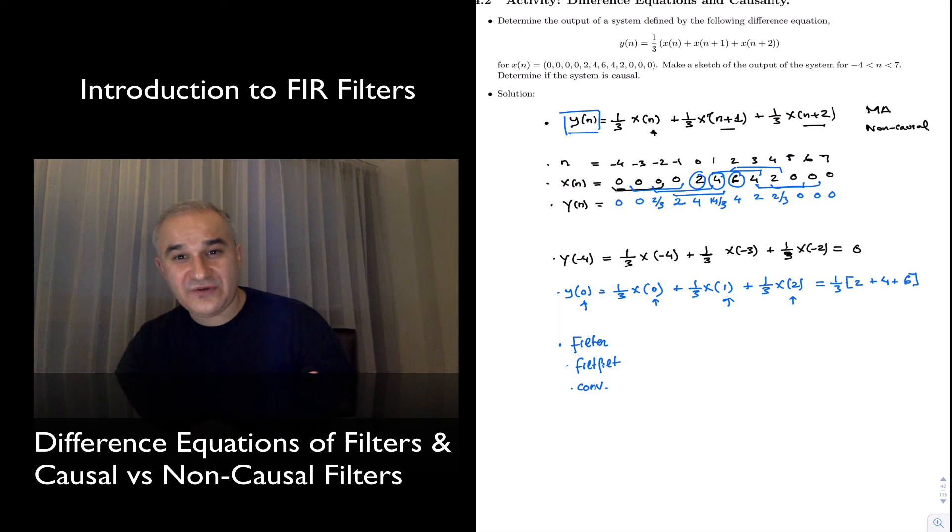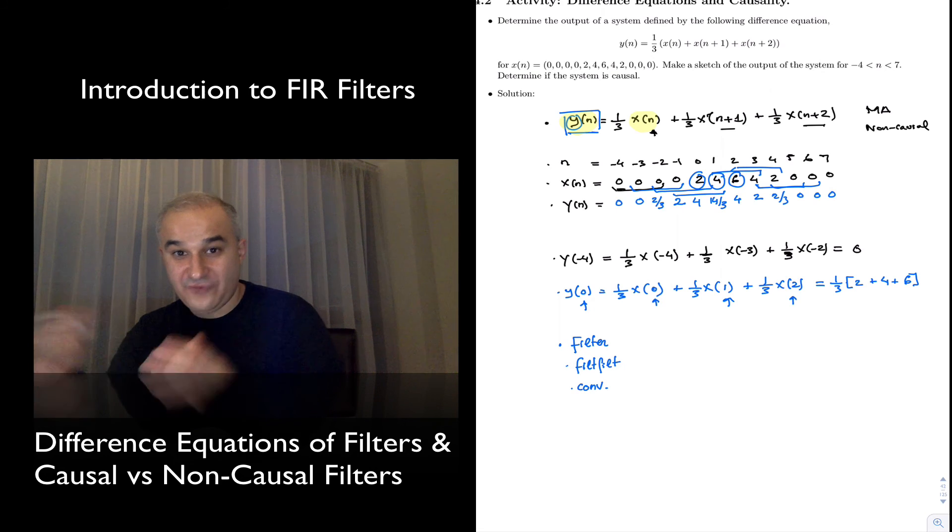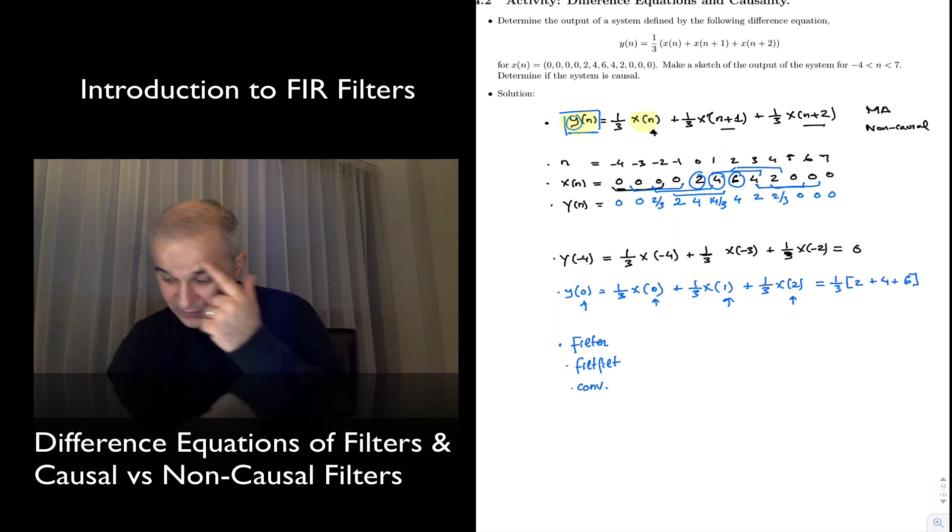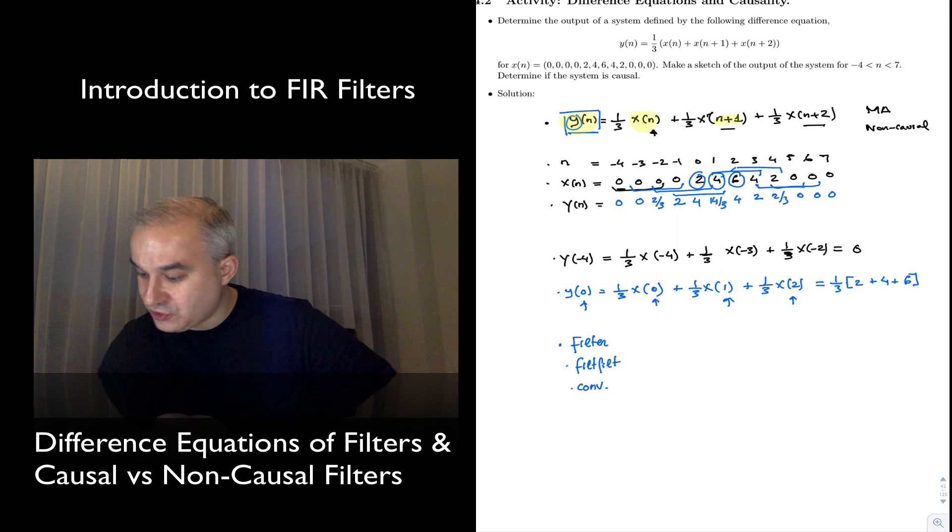3, by looking at the difference equation and looking whether the output, Y, depends on present and past inputs or on present and future inputs, or if you use any future input, like in this case, future N plus 1, N plus 2, that will mean that the system is non-causal.